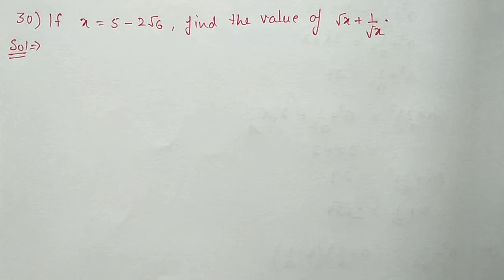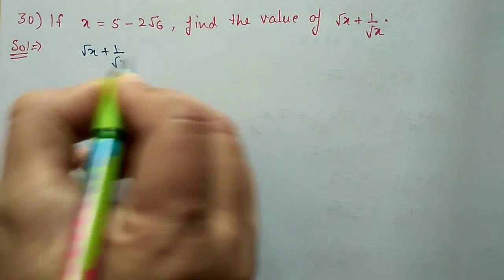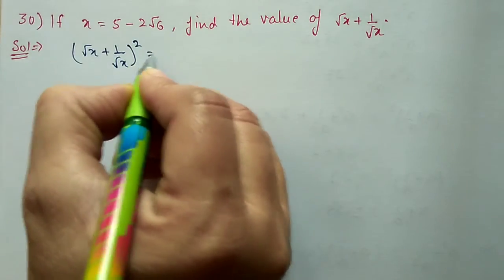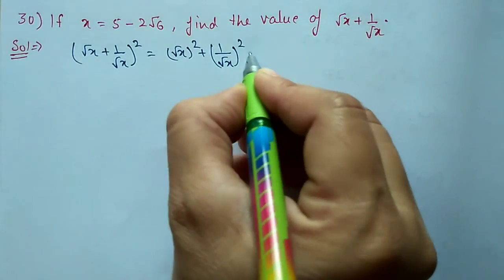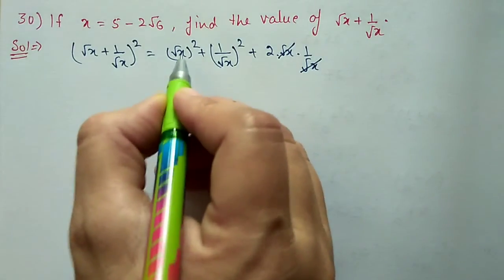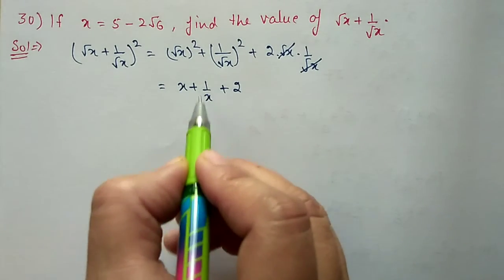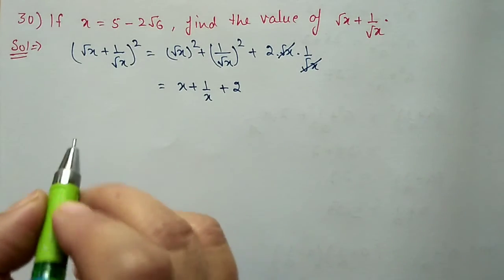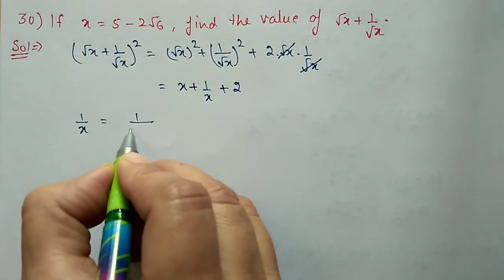Next, question number 30: if x = 5 − 2√6, find the value of √x + 1/√x. We will use the square formula: (√x + 1/√x)² = (√x)² + (1/√x)² + 2 × √x × 1/√x. The root terms cancel, giving x + 1/x + 2. The x value is given; we need to find 1/x.